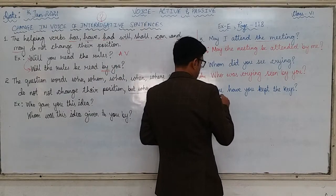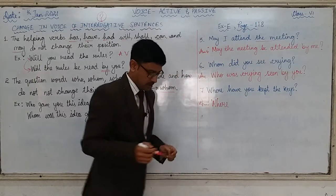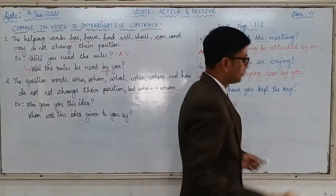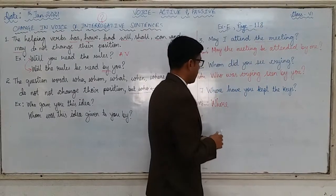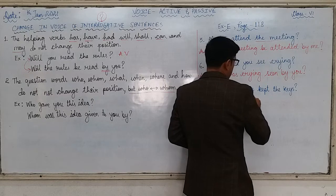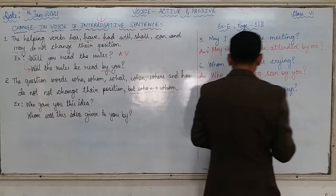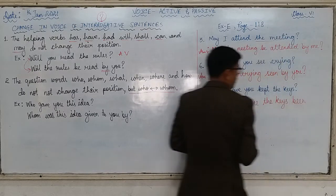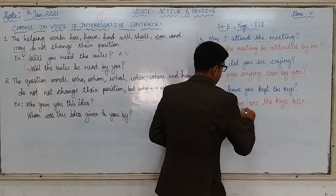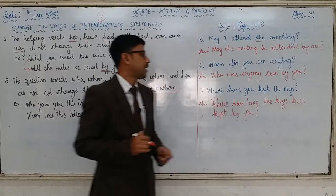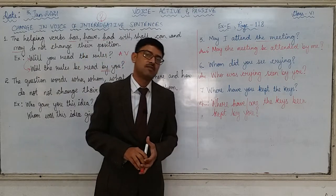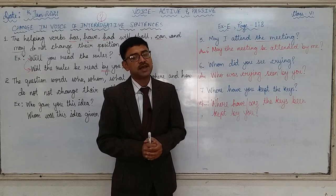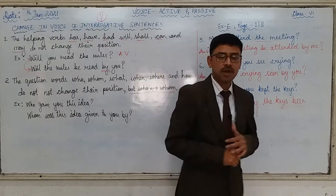Next: 'Where have you kept the keys?' The position will not change and the word will also not change because it does not fall under the category of who or whom. So we write 'where' first: 'Where have the keys been kept by you?' or 'Where are the keys been kept by you?' Keeping all these things in mind, please do exercise number D in your grammar copy and send it to me for correction by 7 pm today. That is it for the day. Thank you, bye bye, and take good care of yourself.